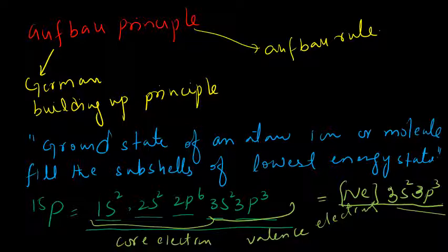3s² and 3p³ are the valence shells — these are the higher energy shells. They will be filled after filling the core electron configuration.